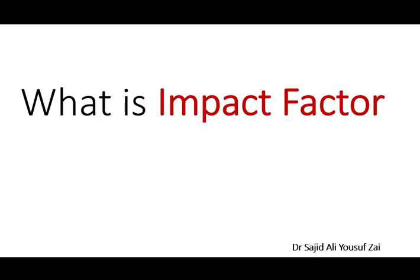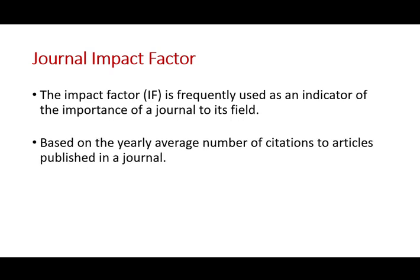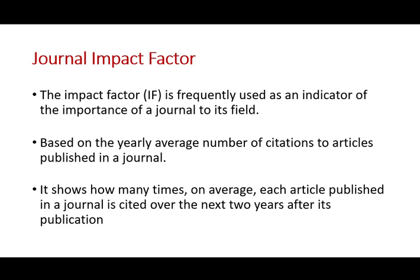In this video I'll talk about what is impact factor and how it is calculated. Journal impact factor is frequently used as an indicator or measurement of the importance of a journal to its field. It is based on the yearly average number of citations to articles published in a journal from the last two years, showing how many times on average each article is cited over the next two years after its publication.